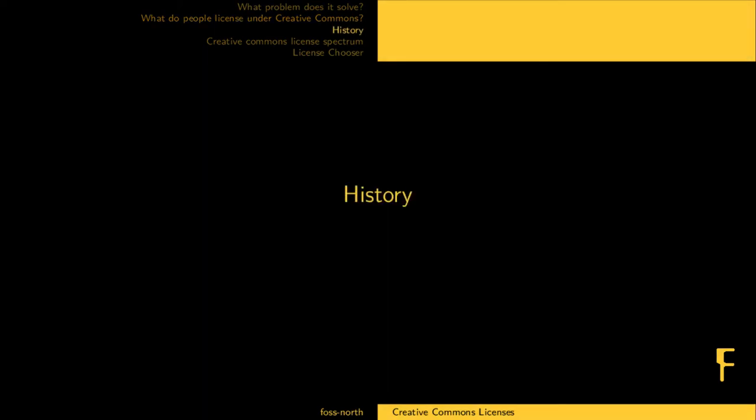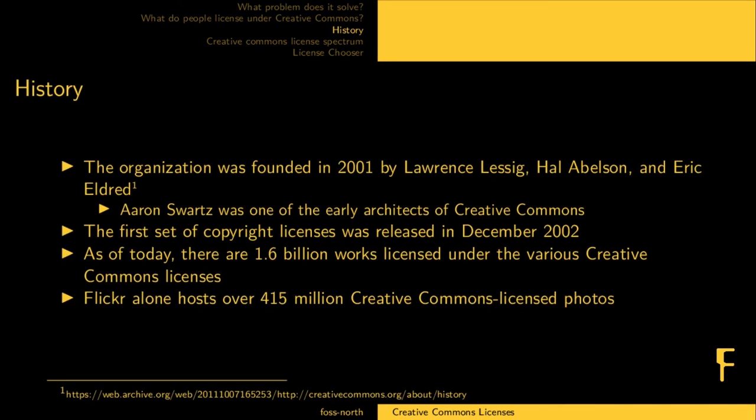A little bit of history: the organization was founded in 2001 by Lawrence Lessig, Hal Abelson, and Eric Eldred. Aaron Swartz, who was quite famous, was one of the early architects of Creative Commons. The first set of copyright licenses were released in December 2002. And as of today, there are about 1.6 billion works licensed under the various Creative Commons licenses.